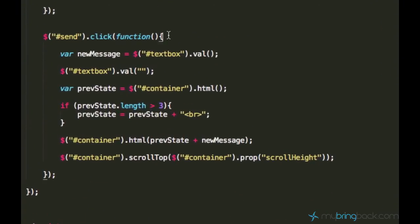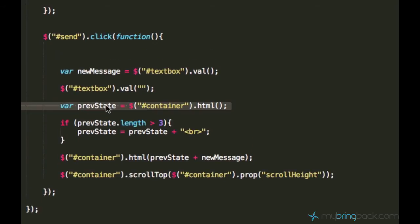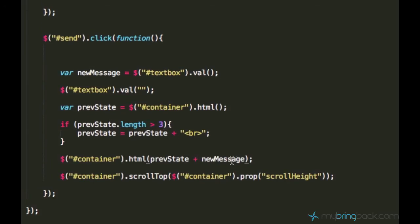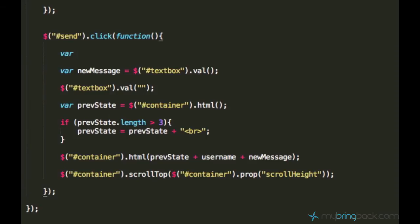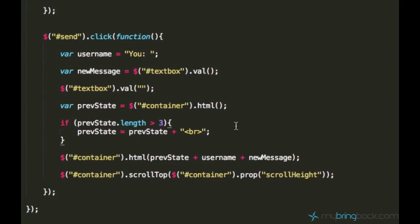The previous state is something which is before, and we have to add the name before the new message. So we can go ahead and add a new variable called username. Right here we can define a new variable and call it username, and for now let's just set it to 'you'. Now the variable is defined and we should have this username 'you' before every message.